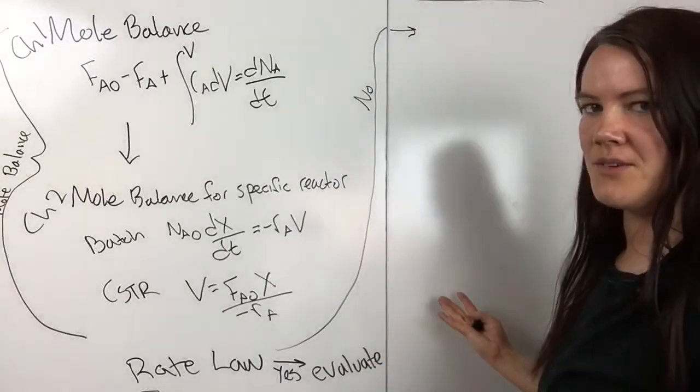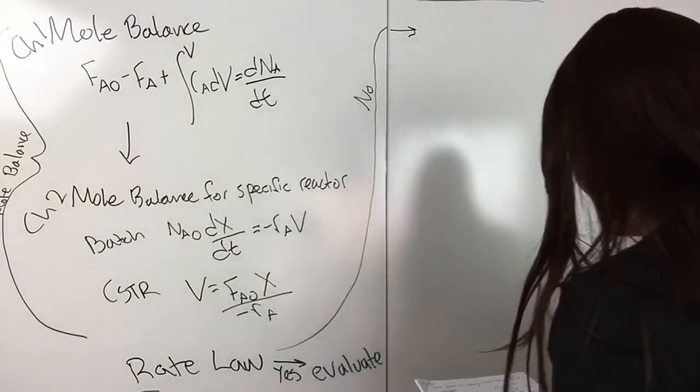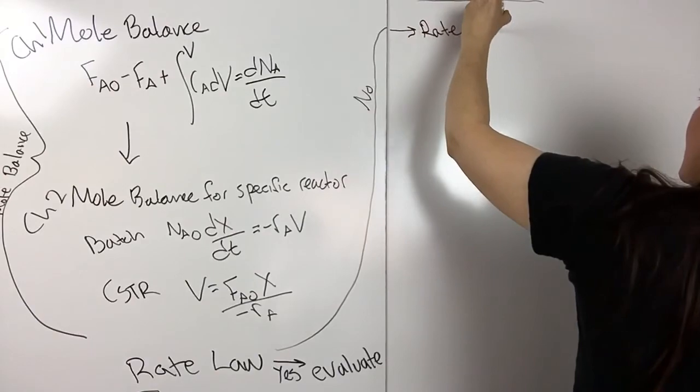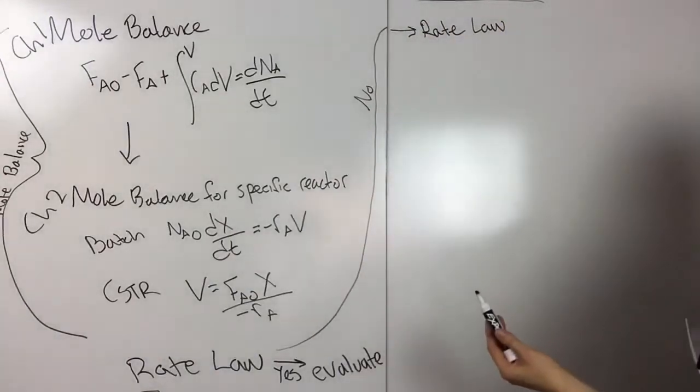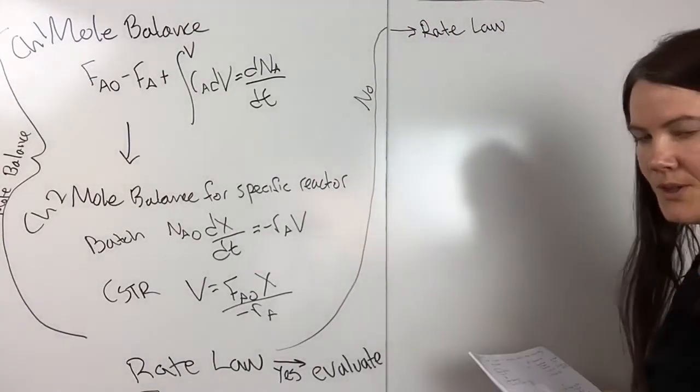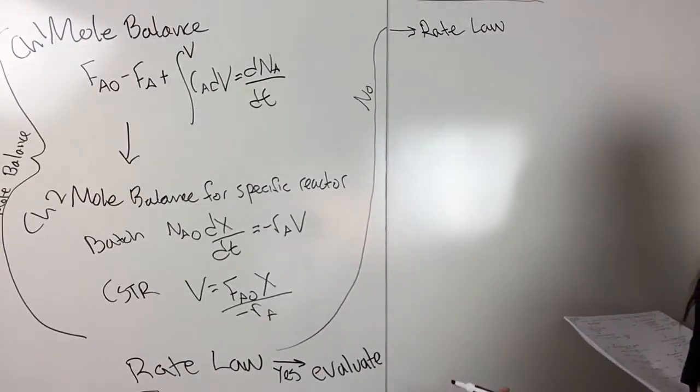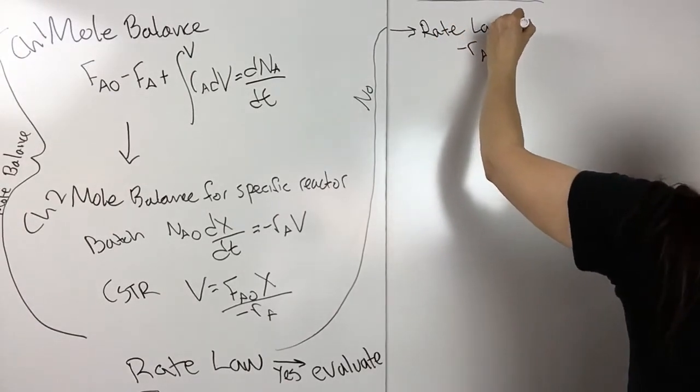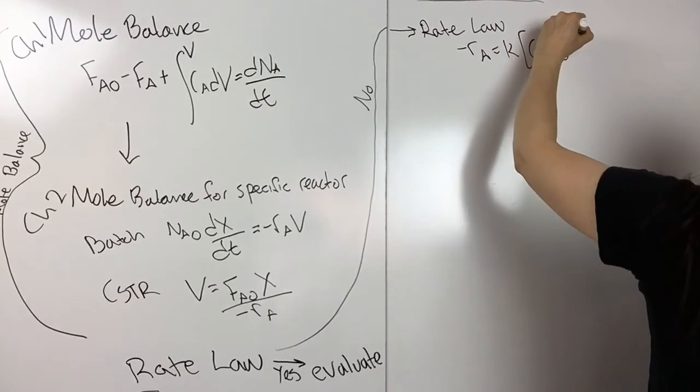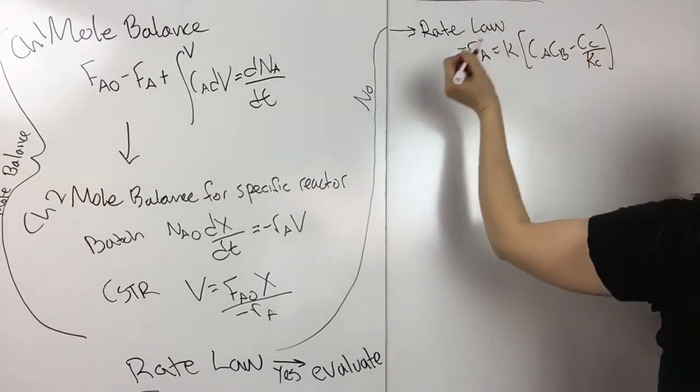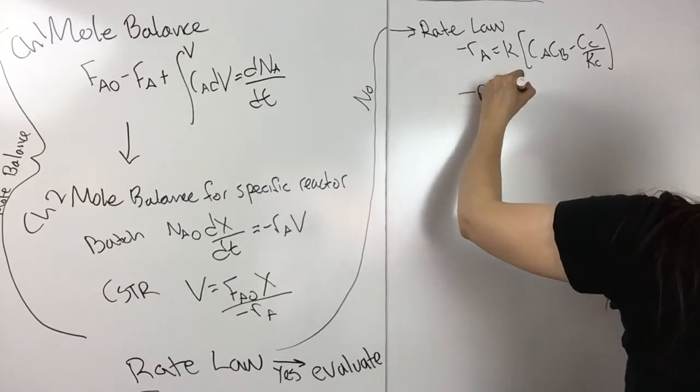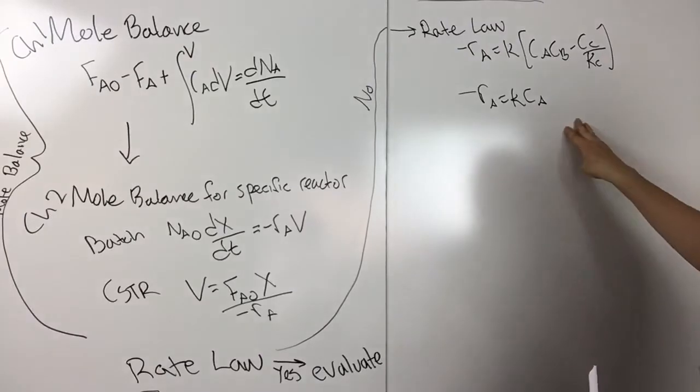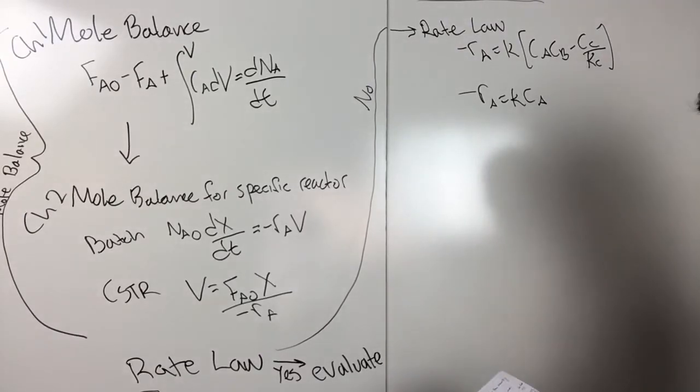And this is where you would go on and evaluate the rate law. And so for instance, if it was, so if it, say you have a reversible, say you have a reversible reaction. Then it would look like this. Okay, CA, CB, minus CC, over KC. Or if it, it could look like this. So, I mean, you remember writing these. So you just need to write your rate law depending on the information you have for the problem.